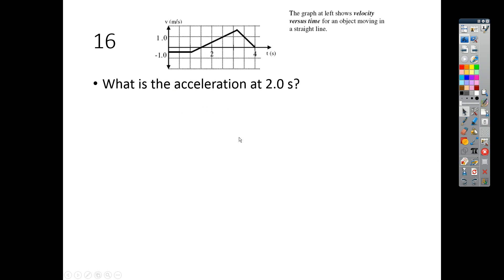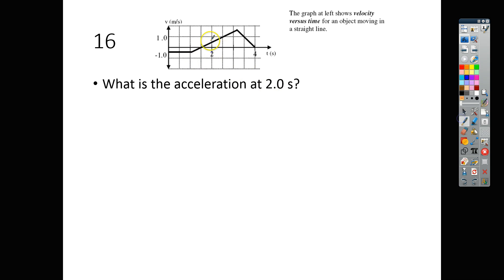Number 16, what is the acceleration at 2 seconds? Right at 2 seconds, this is where you are. And we know that this entire line is the slope of the velocity versus time curve. And slope is the change in velocity over the change in time, and that is acceleration. So let's pick a couple really easy points to do this with. We're going to pick this point right here and this one right here since it's right on the 0 line.